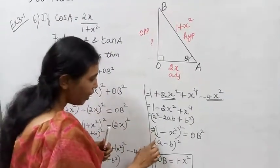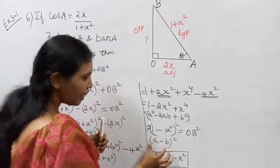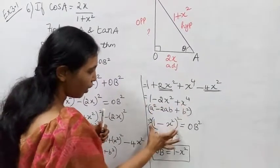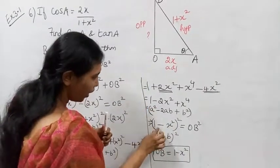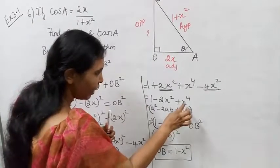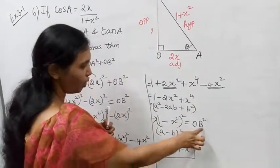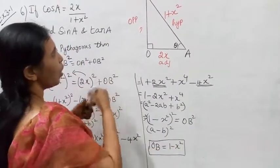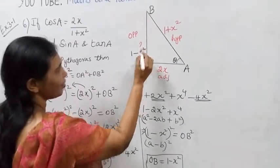Since we have a minus b all squared form, with a equal to 1 and b equal to x squared, we get 1 minus x squared all squared. Therefore OB equals 1 minus x squared.